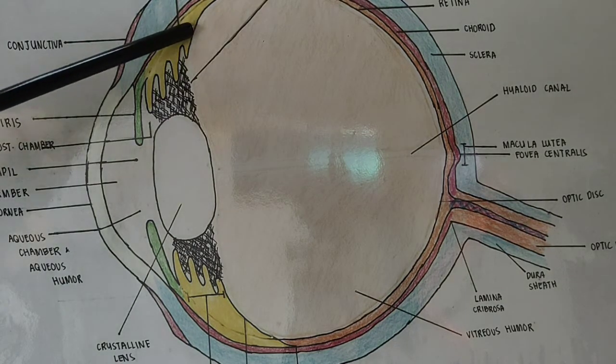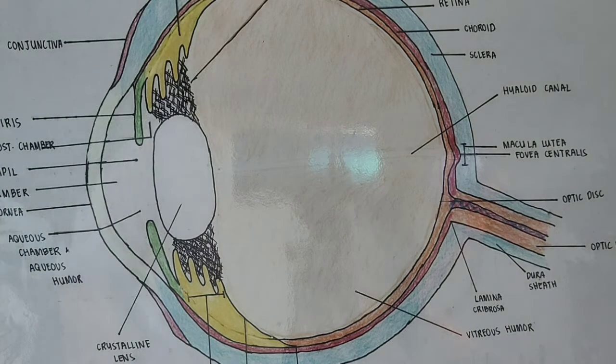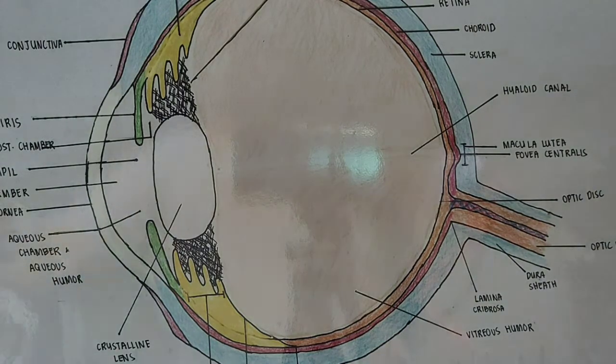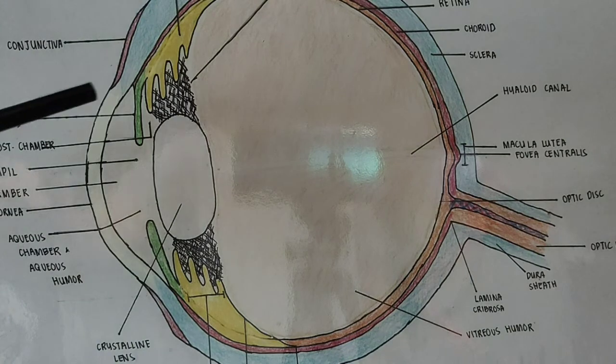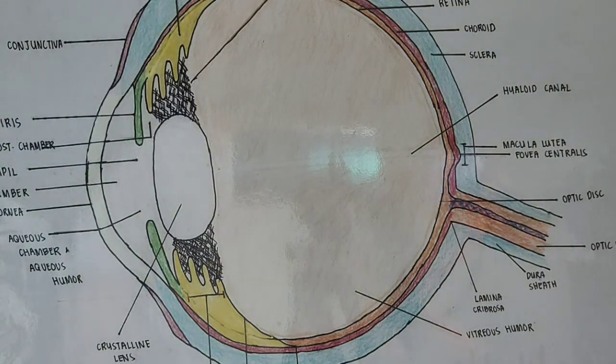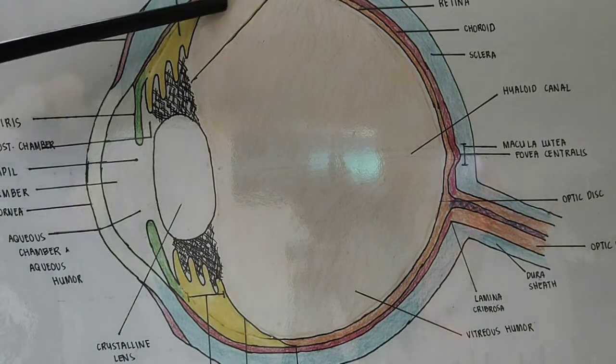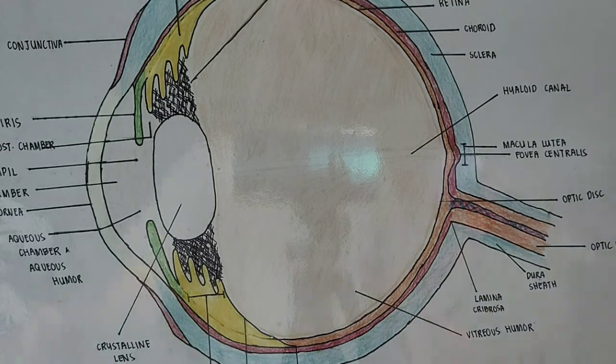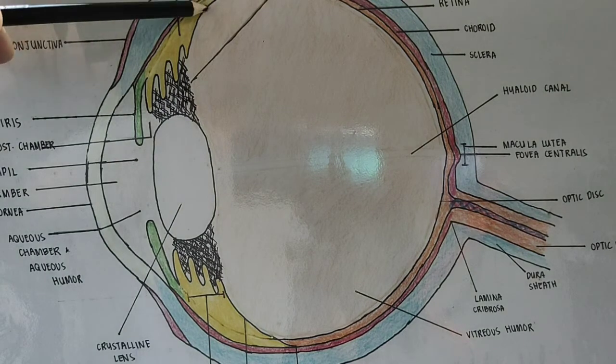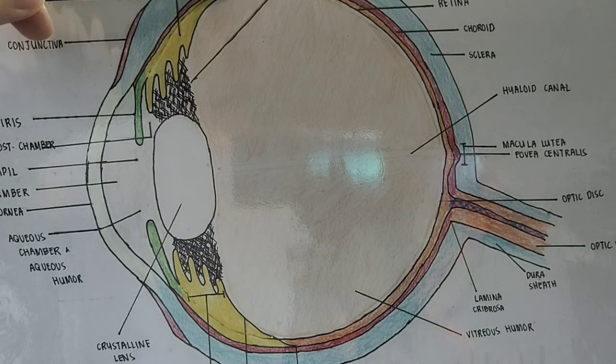You can see that the ciliary body is subdivided into two parts. You have the pars plicata and you have the pars plana. The parts with projections, these teeth-like projections, this is the area we call the pars plicata. The part that slopes down, this is the pars plana. It is also important that where the pars plana ends, that is where the retina begins.